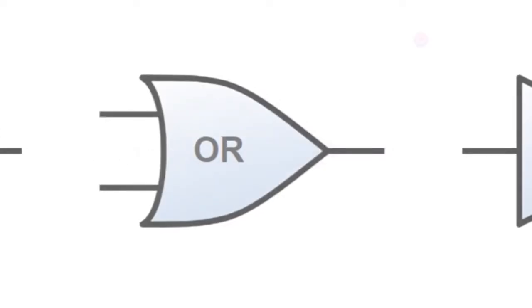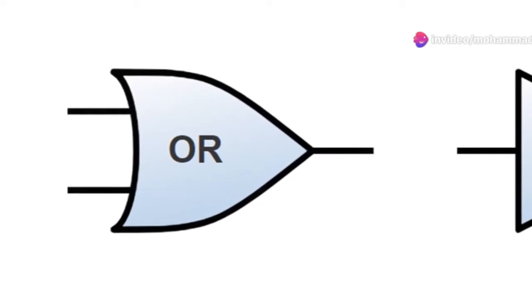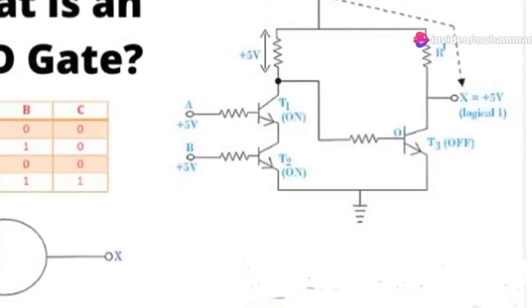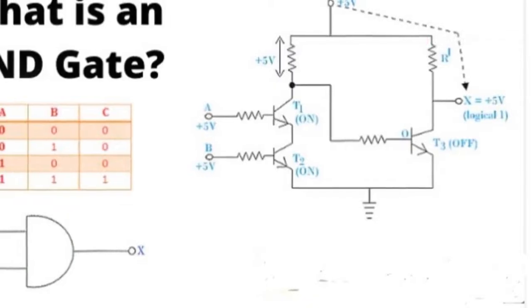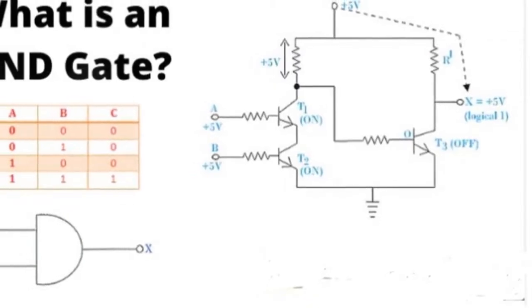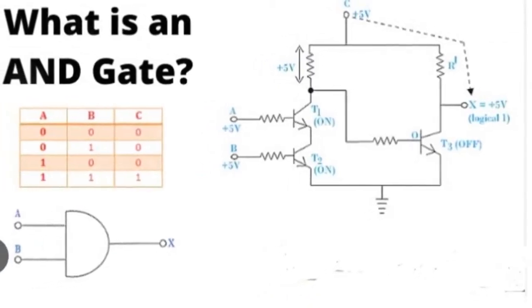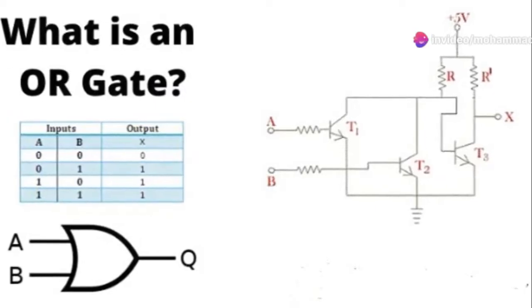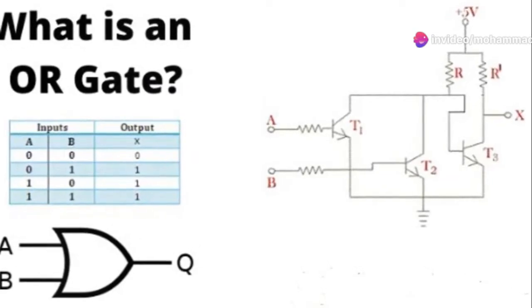Let's meet the three basic logic gates: AND, OR, and NOT. The AND gate acts like the word "and" in a sentence. It only outputs a 1 if both of its inputs are 1. Think of it like needing both keys to open a lock. The OR gate, on the other hand, acts like the word "or". It outputs a 1 if at least one of its inputs is 1.